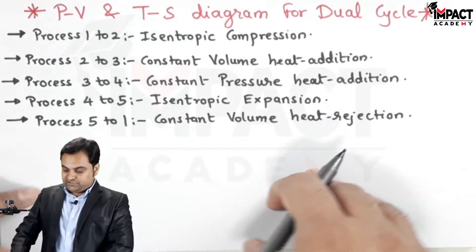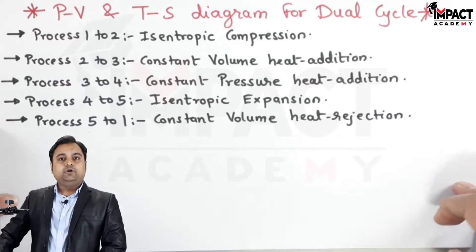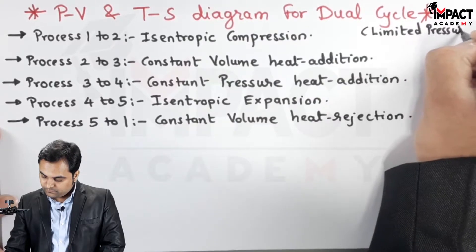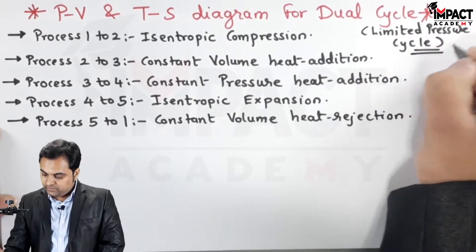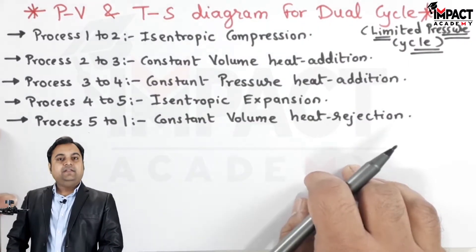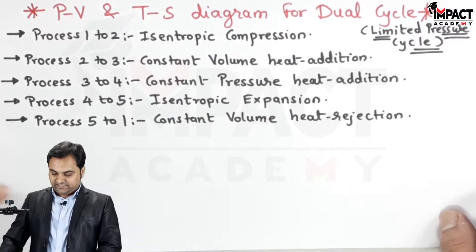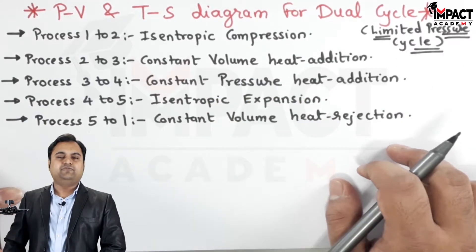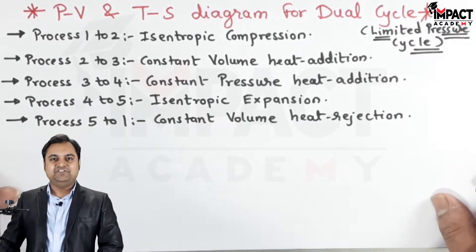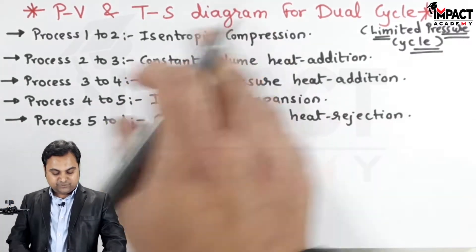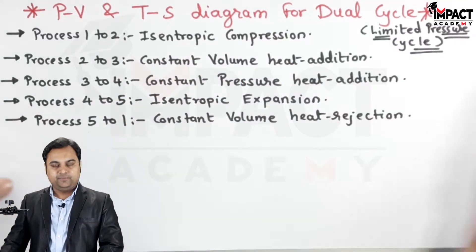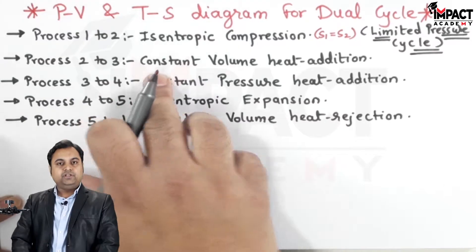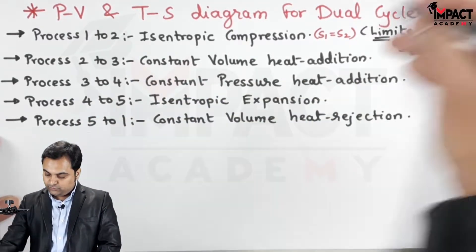Here are the processes in the case of dual cycle. Dual cycle is also called the limited pressure cycle, and here the heat supplied process is extended — it is at constant volume and even at constant pressure. This cycle is preferred for heavy-duty diesel engines. The first process is isentropic compression, meaning entropy remains constant: s1 is equal to s2. During process two to three, the volume remains constant, so V2 is equal to V3.